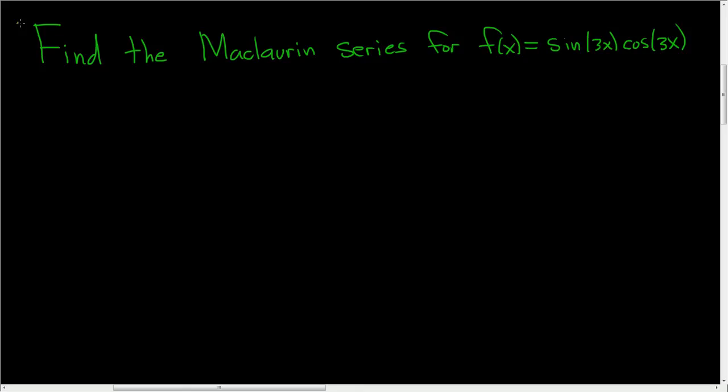Find the Maclaurin series for f of x equals the sine of 3x times the cosine of 3x. Solution.